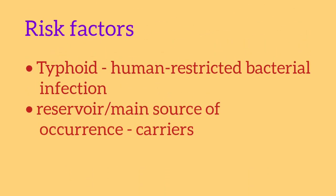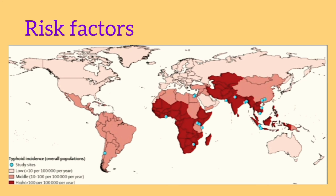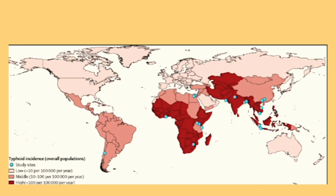Since typhoid is a human-restricted bacterial infection, its reservoirs or the main source of occurrence are carriers, which complicate its source identification. Industrialized nations with proper sanitation and food handling facilities have a reduced number of cases, whereas developing nations like parts of Asia and Africa possess the highest rate of infection due to lack of access to clean water, proper sanitation, and healthcare facilities.